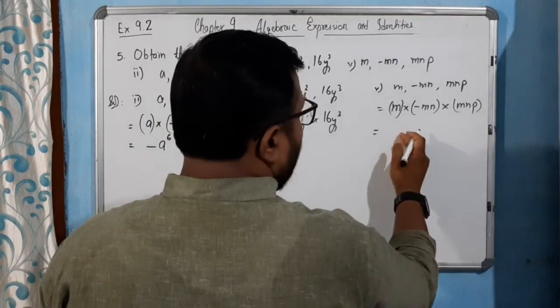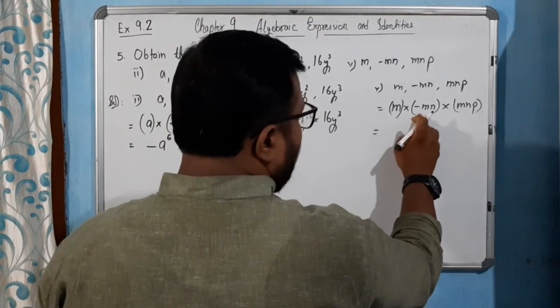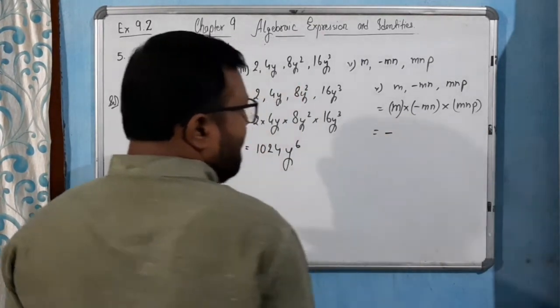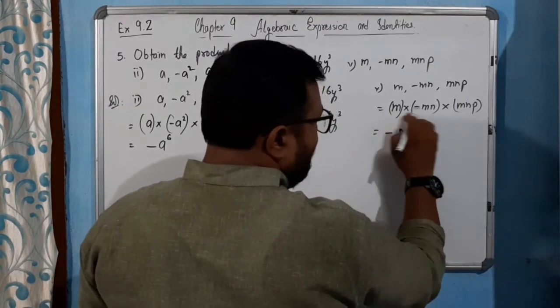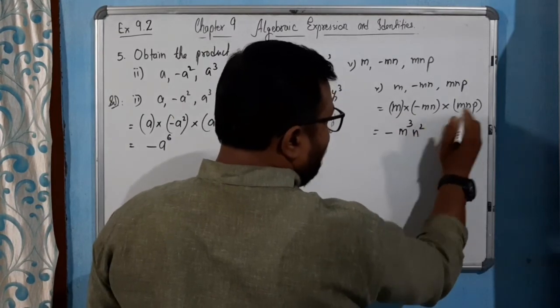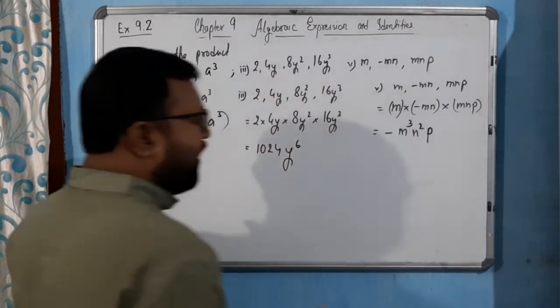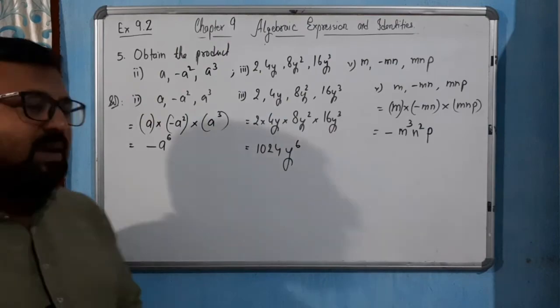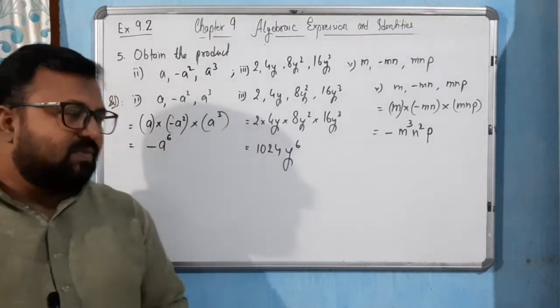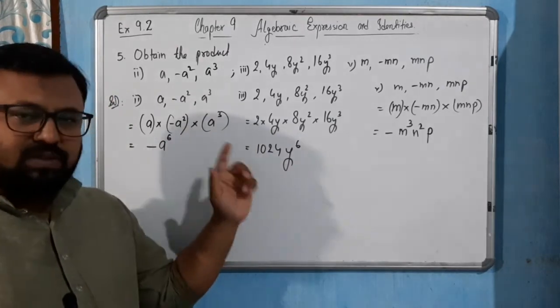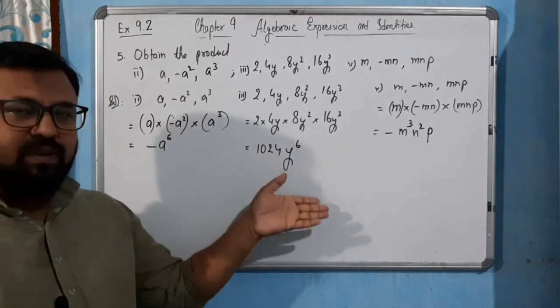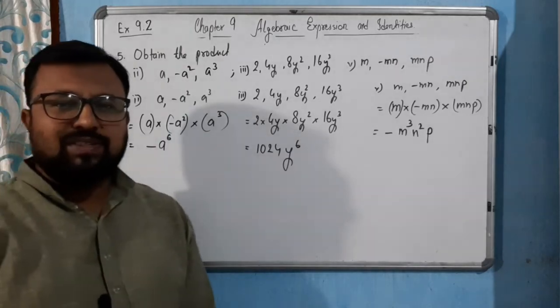So first multiply the sign: plus minus minus, minus plus minus, so minus sign. M, N, M means M cube, only N N so N is square, and only one P so P. So minus M cube N square P. So it's very simple - first multiply the sign, then multiply the constant, and then multiply the variable. We will have the accurate value of answer. I hope you have understood.